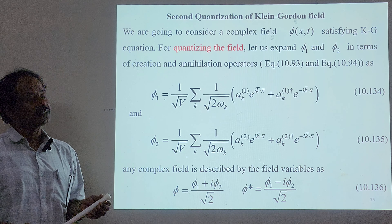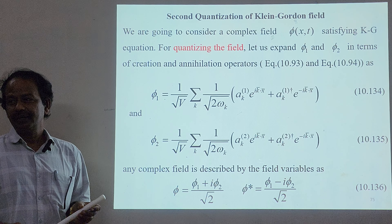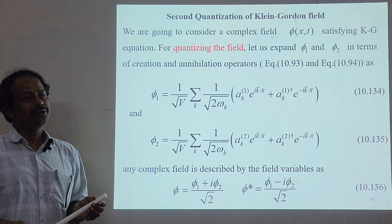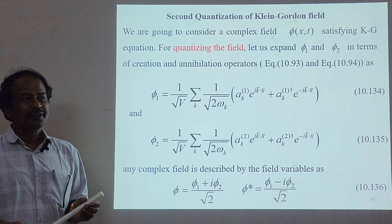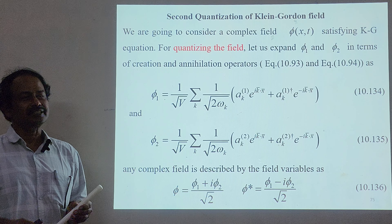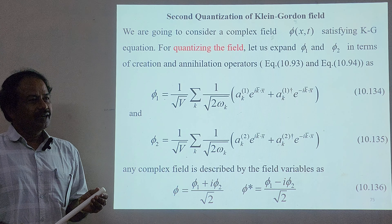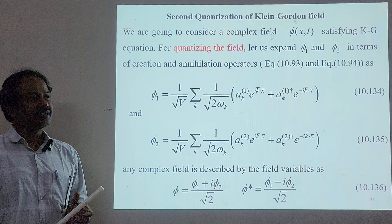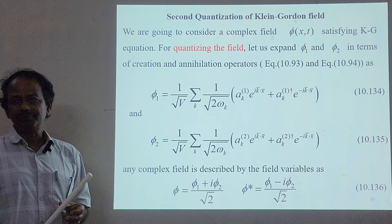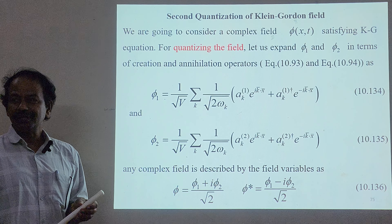The last topic is second quantization of the Klein-Gordon field. In first quantization we quantize the particles and thereby quantize the energy of the material particles. In second quantization we quantize the field and thereby quantize the energy of the photon. First quantization goes from particles to waves, and second quantization goes from waves to particles, which brings out the dual nature of the quantum particle.